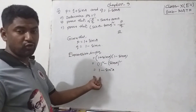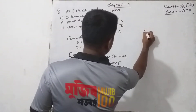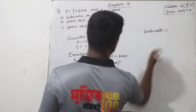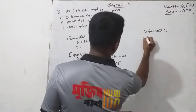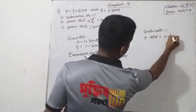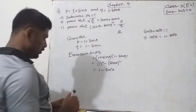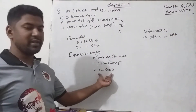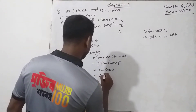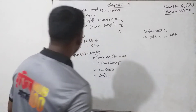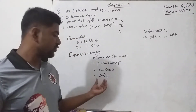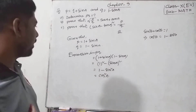This is another trigonometric formula. We know sin squared theta plus cos squared theta equals 1, so we can write cos squared theta equals 1 minus sin squared theta. Therefore, 1 minus sin squared A equals cos squared A. We find out the value of PQ equals cos squared A.